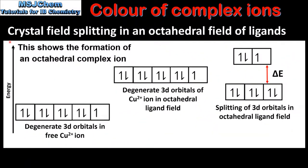Next we look at the crystal field splitting in an octahedral field of ligands. On the left we have the 5 degenerate 3d orbitals in a free copper 2+ ion. As the ligands approach the central metal ion, the repulsion causes the 5 3d orbitals to increase in energy. Because of the unequal repulsion we have splitting, with 2 3d orbitals of higher energy and 3 3d orbitals of lower energy.